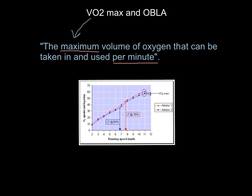Here's a graph of VO2max. We have two different people: athlete one is the red line, athlete two is the blue line. They're on a treadmill and increasing running speed every two minutes or so. As speed increases, the amount of oxygen they're taking on board and using increases — as you'd expect, you use more oxygen jogging than sitting still. As they work harder and harder, they consume more and more oxygen.